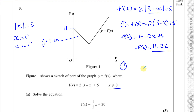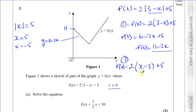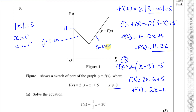The second branch is when the inside is negative, so we write 2(x − 3) + 5 = 2x − 6 + 5 = 2x − 1. So f(x) = 2x − 1 for this branch. This part of the graph has a positive gradient, and if extended downward it passes through a negative value on the y-axis. So the two branches are y = 11 − 2x and y = 2x − 1.